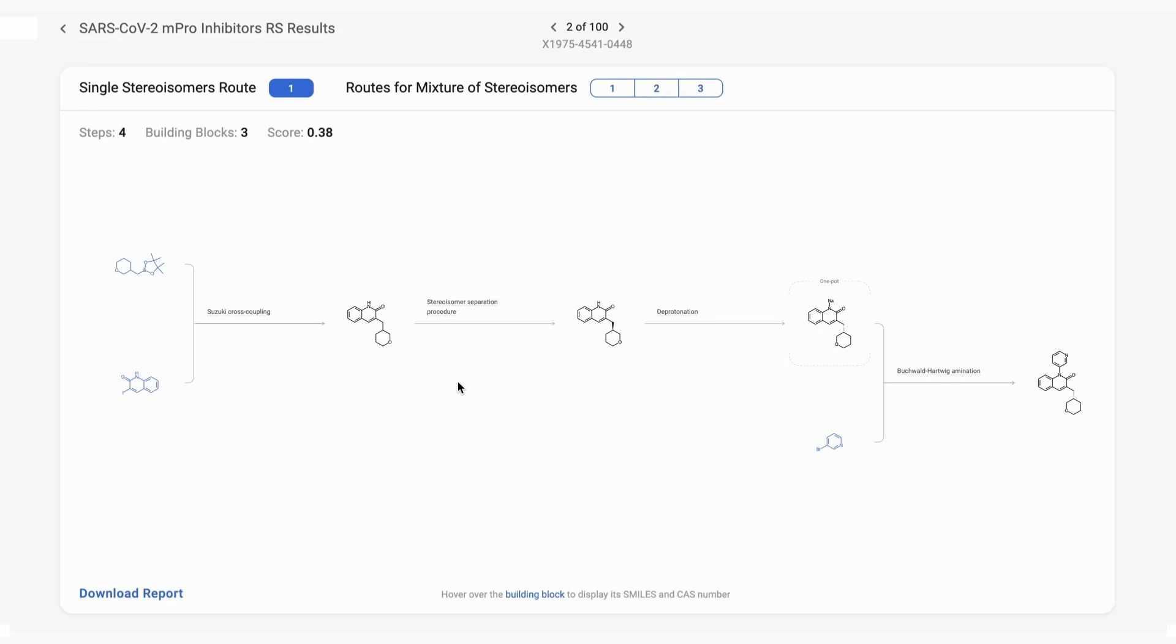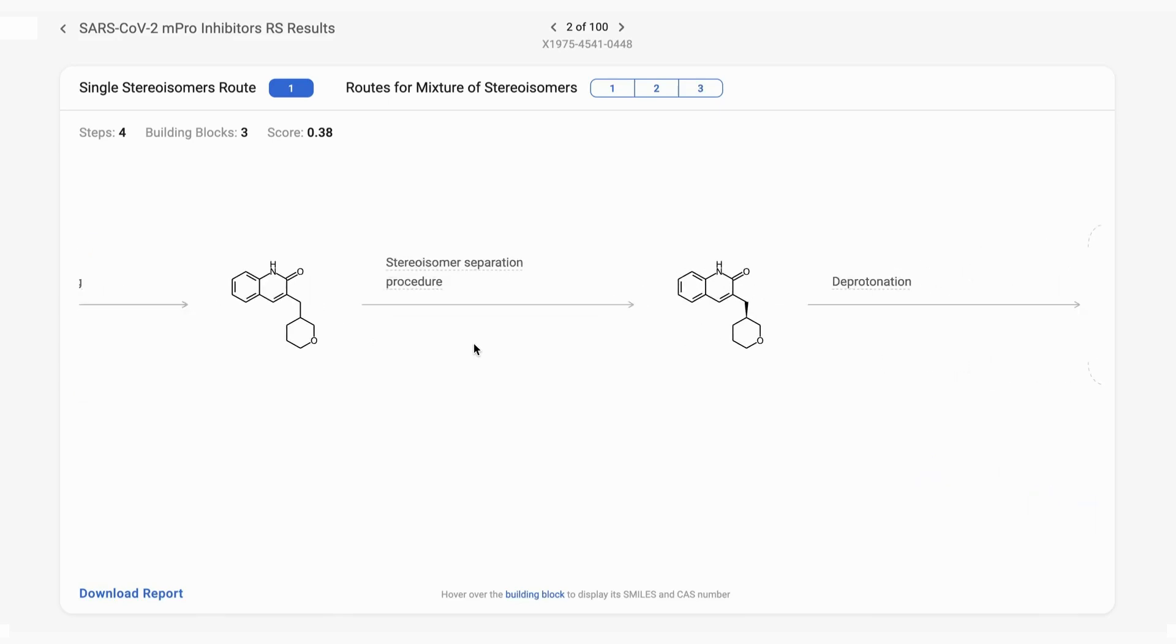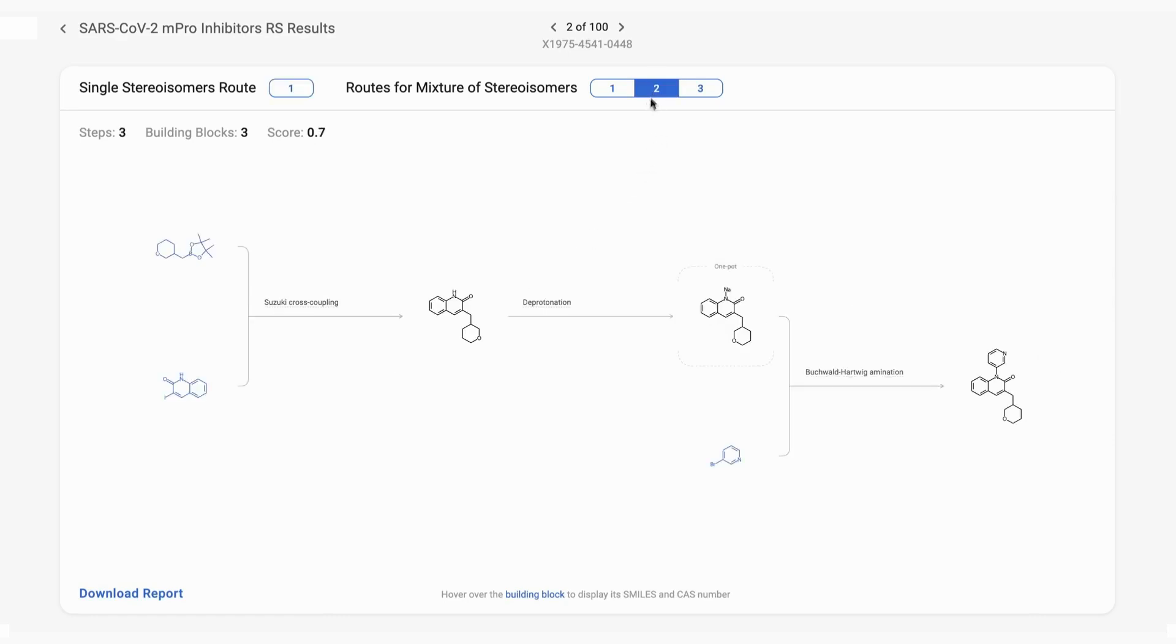Building blocks that contain stereocenters are identified, and a separation step can be applied to reach the desired compound or intermediate as demonstrated here. If it was specified during the configuration step, you can also view a racemic version of the route by clicking on the above tabs.